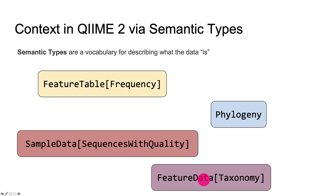These are things like a feature table of frequency, a phylogeny, a sample data of sequences with quality, or a feature data of taxonomy. If none of those words mean anything to you — if you don't know what taxonomy is or you've never heard of a feature table — that's fine. That's the point of this workshop. We're going to introduce these concepts over the next few days. But maybe some of you are familiar with these concepts, like you've received sequencing product from your sequencing center. You might recognize that the semantic type sample data of sequences with quality describes that data you've received.